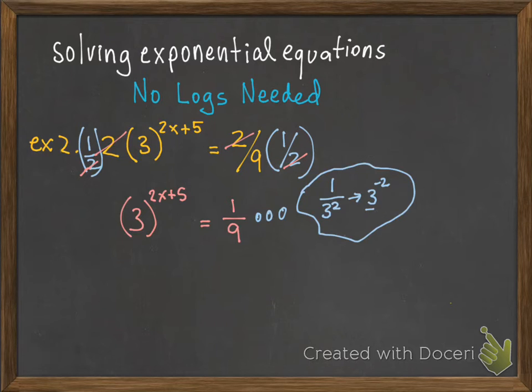Now I have the base of 3, and that's going to make my solving a lot easier from here on out because once I equate the bases, I can begin to solve for the exponents. I have 3 to the 2x plus 5 power on the left, and now I rewrite 1/9th as 3 to the negative 2 power.